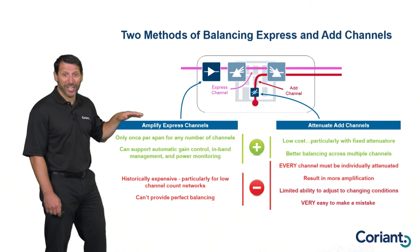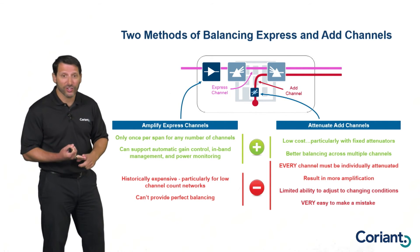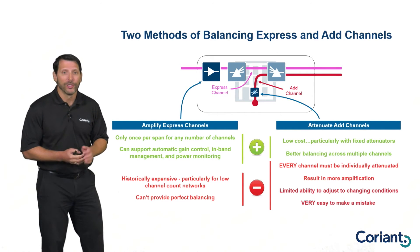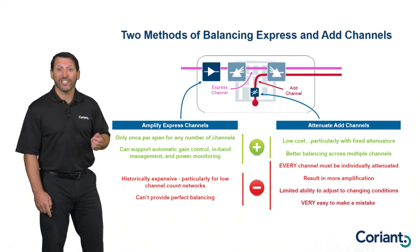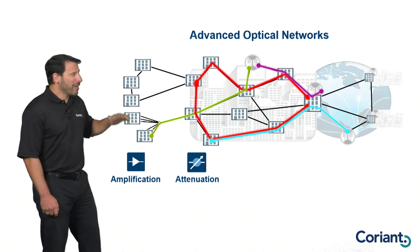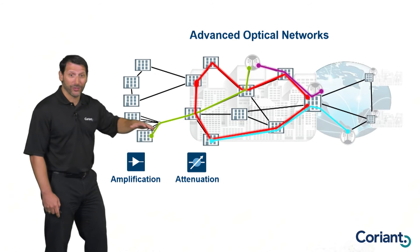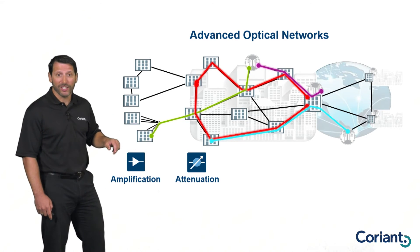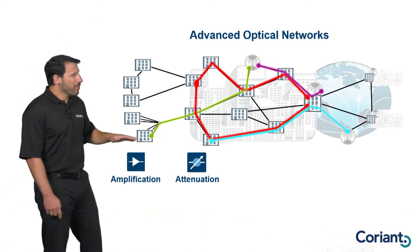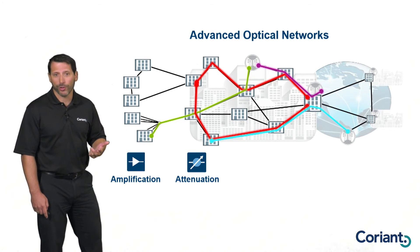These are the pluses and minuses of attenuation and amplification — there is no right answer for all networks. It depends on the network architecture, the kind of services you're providing, your appetite for operational expense, and how much money you're willing to spend upfront. For individual smaller networks, you must choose between the two. But in larger network environments, you can use both — combining accurate per-channel power balancing with amplification to get better network solutions. Beyond these two core mechanisms, there are additional functions you can build into a network to improve automation, such as power monitoring of each individual channel, feeding that information back into the attenuators and amplifiers for more accurate power balancing in an automated fashion.